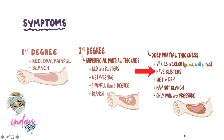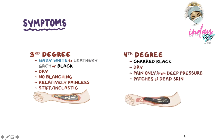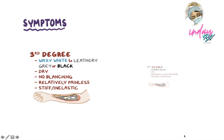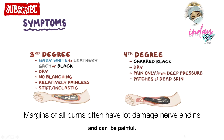Second degree deep partial thickness burns may vary in color from yellow or white to red, have blisters, and can be wet or dry due to damage to blood vessels and nerve endings. These may not blanch, and pain may only be felt from pressure due to nerve damage. Third degree burns can appear waxy white to leathery gray or black, are dry, do not blanch, and may feel only like deep pressure or can be relatively painless. The elastin damage causes stiffness. Fourth degree burns are charred black, dry, and largely painless due to complete destruction of nerve endings, with patches of dead skin.